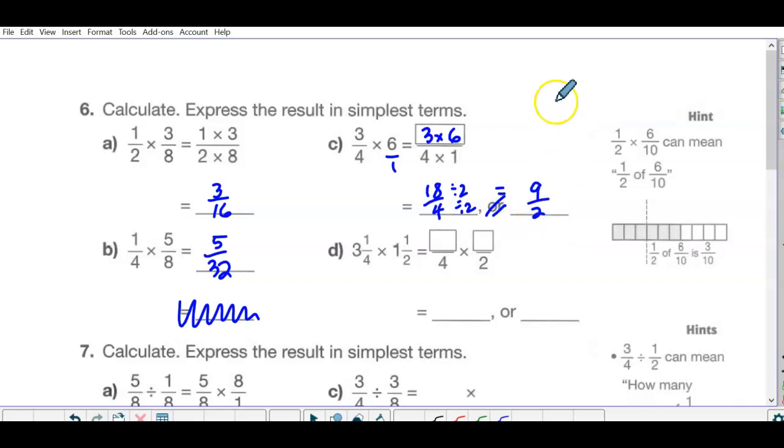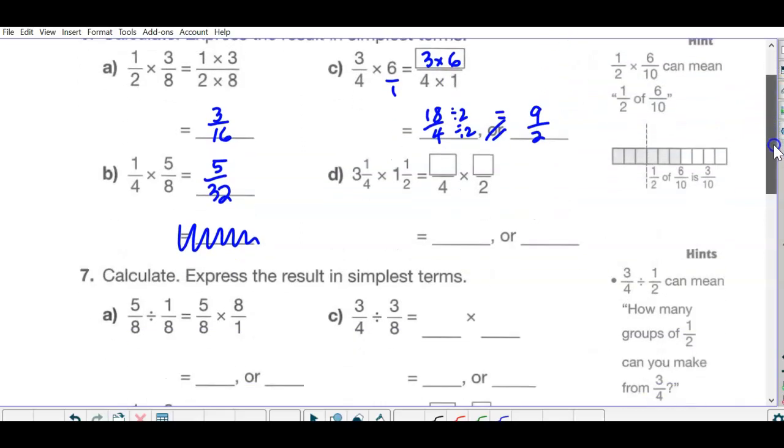Next one, you do need to convert to improper fractions. So 12 plus 1 is 13, 2 plus 1 is 3. And then multiply. That would be 39 over 8. The OR would be converting to a mixed number. So 4 is 32, so remainder is 7, which is 4 and 7 eighths.